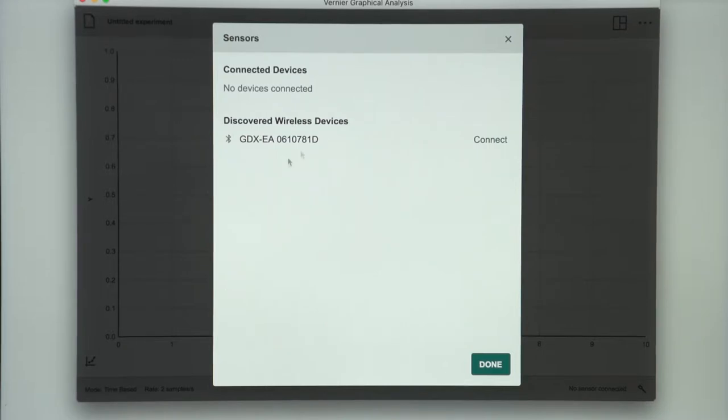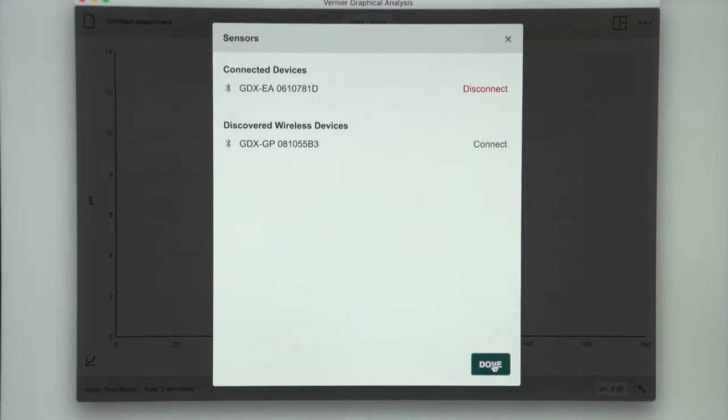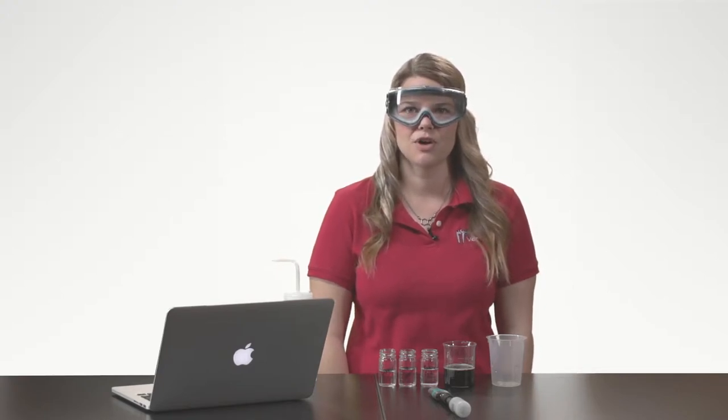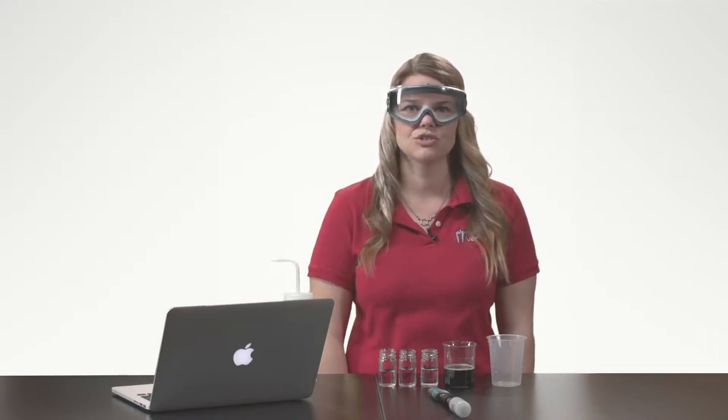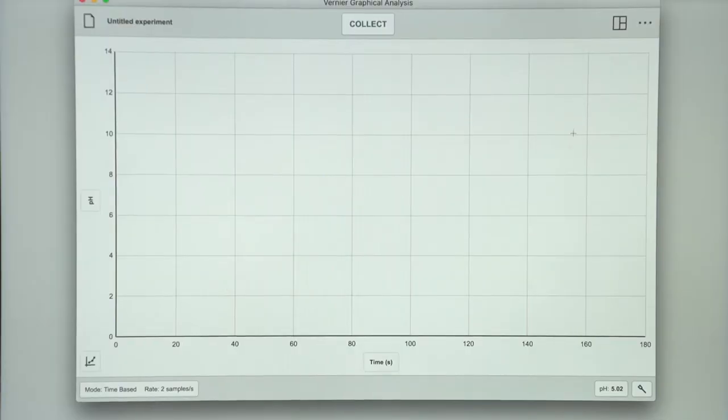I will then connect my pH electrode and select Done. For this experiment, I want to be able to read the pH value from the sensor and record that reading in my laboratory notebook. This requires changing the screen to the meter screen. To do that, I tap on the square icon and change the view to meter.